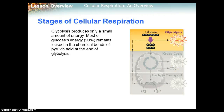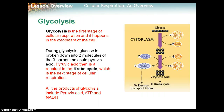Glycolysis produces only a small amount of energy. Most of the glucose's energy — about 90% of it — remains locked in the chemical bonds of a molecule called pyruvic acid at the end of glycolysis. Glycolysis is the first stage of cellular respiration and it happens in the cytoplasm of the cell. The word glycolysis means glyco, referring to glucose, and lysis meaning to break — so it's splitting glucose.